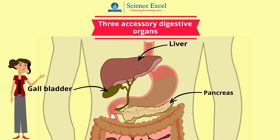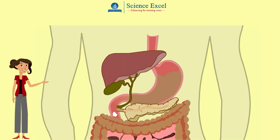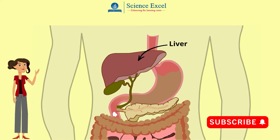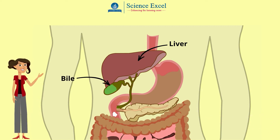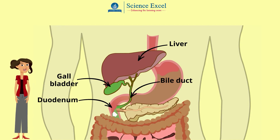Let us understand the role of the liver in the process of digestion. The liver is the largest gland in the body, which produces a yellowish-green watery liquid called bile. This bile is temporarily stored in the gallbladder and flows to the duodenum along the bile duct.